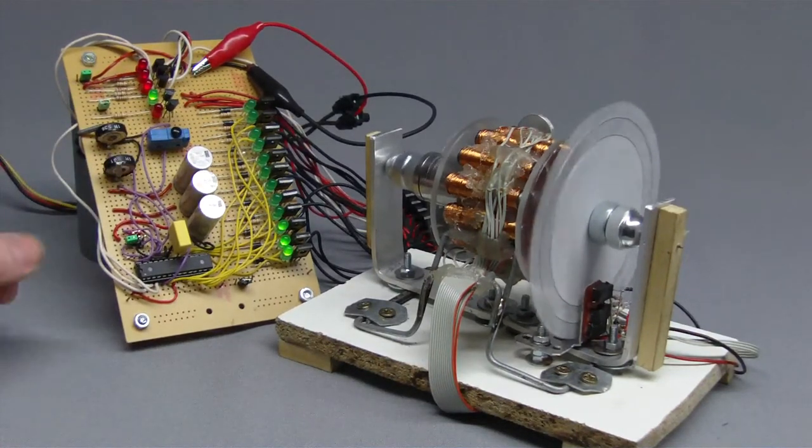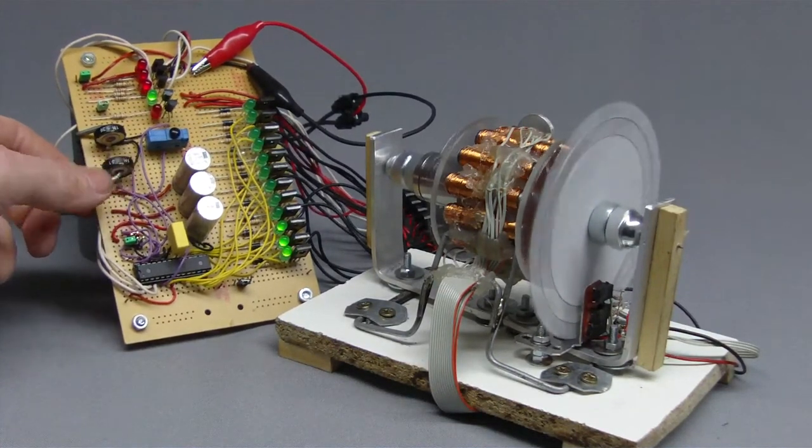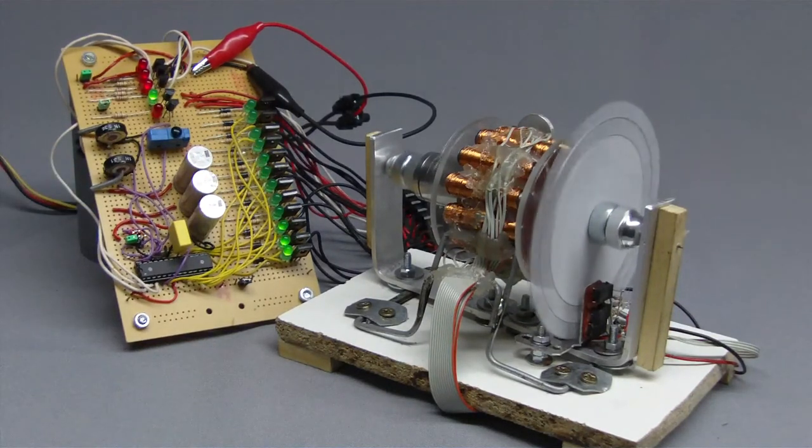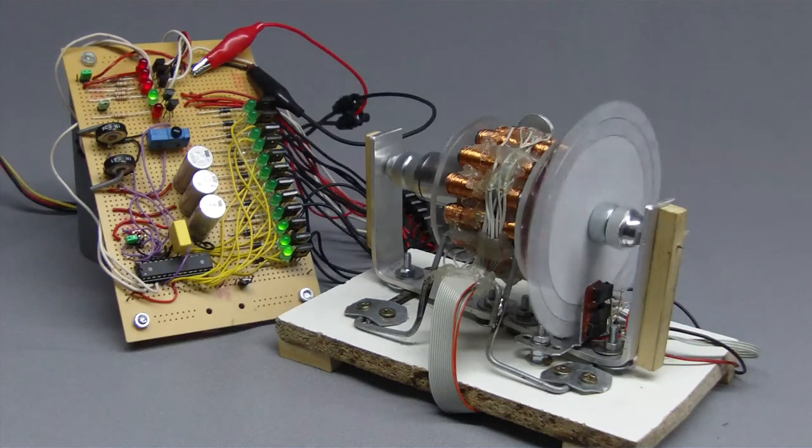If throttle is reduced to zero, the motor continues to rotate with constant speed. You can see that the control software activates another triplet from time to time.